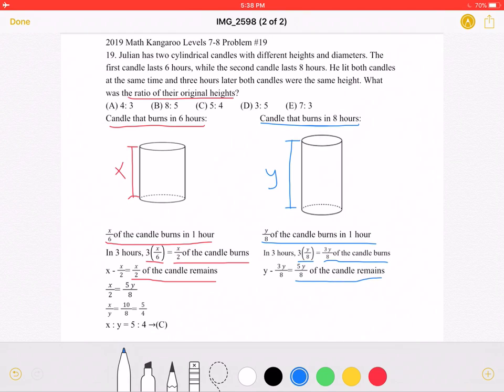The problem states that three hours later, both candles were the same height. Which means that x over 2, which is the amount remaining after three hours for the red one,